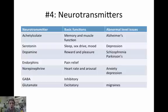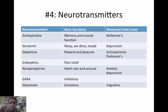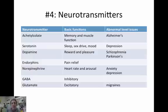Mania involves an overload of serotonin and other factors. Depression and serotonin are related — that's why you need to know SSRIs, selective serotonin reuptake inhibitors. Dopamine is about reward and pleasure — drugs work heavily on dopamine, that's the reward pathway where addiction takes hold. Schizophrenia involves too much dopamine, so antipsychotic medicine blocks it. Parkinson's has not enough dopamine.